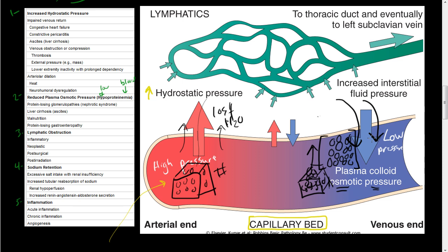That's how fluid exchange works — fluid comes out into the tissues at the capillary bed and then returns into the venous side. For example, say 10 ounces of fluid comes out on the arterial side, but only 8 ounces are absorbed back on the venous end. The extra 2 ounces goes into the lymphatics — that's why we have a lymphatic system, to collect that extra fluid.